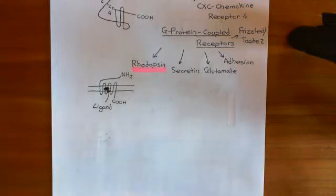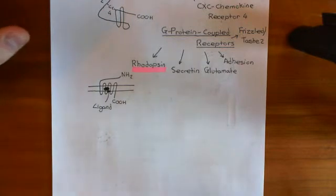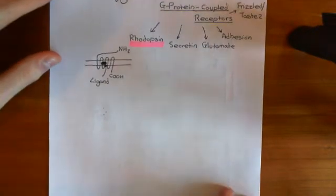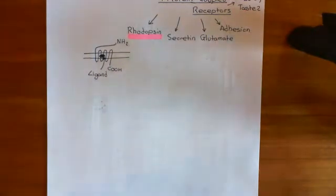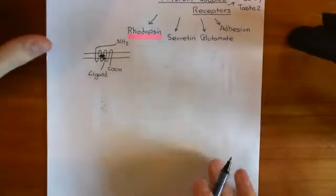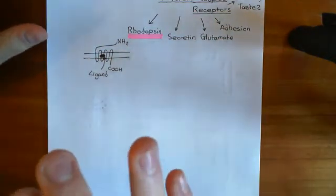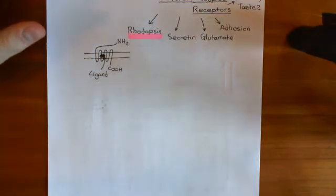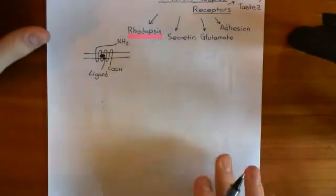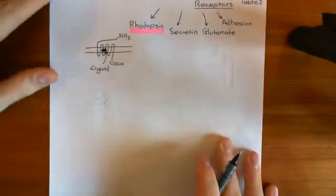Welcome to this next video in which we are discussing the HIV life cycle and antiretroviral drugs. We're in the process of discussing how the HIV virion gets into the cell — how it infects a cell. We've just discussed chemokine receptors, and there are two very important chemokine receptors when discussing HIV: CCR5 and CXCR4. Let's just remind ourselves of where we've got to.